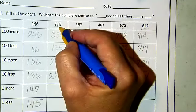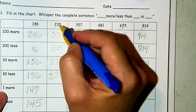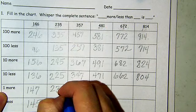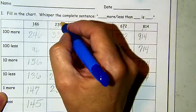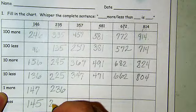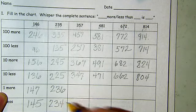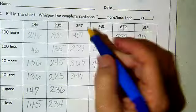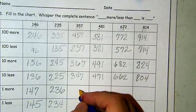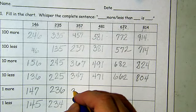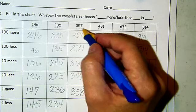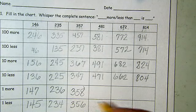Here we have five in the ones place. So if I'm adding one to that, I'm going to have 236. If I'm taking one away from that, it's going to be four — so we're going to have 234. 357 — seven is in the ones place. One more would be eight — it would be 358. One less than seven is six — 356.